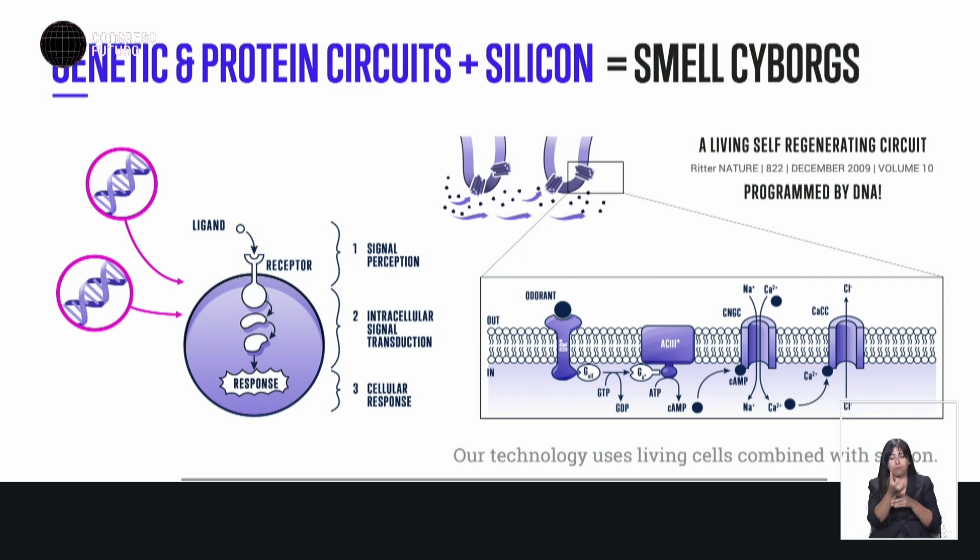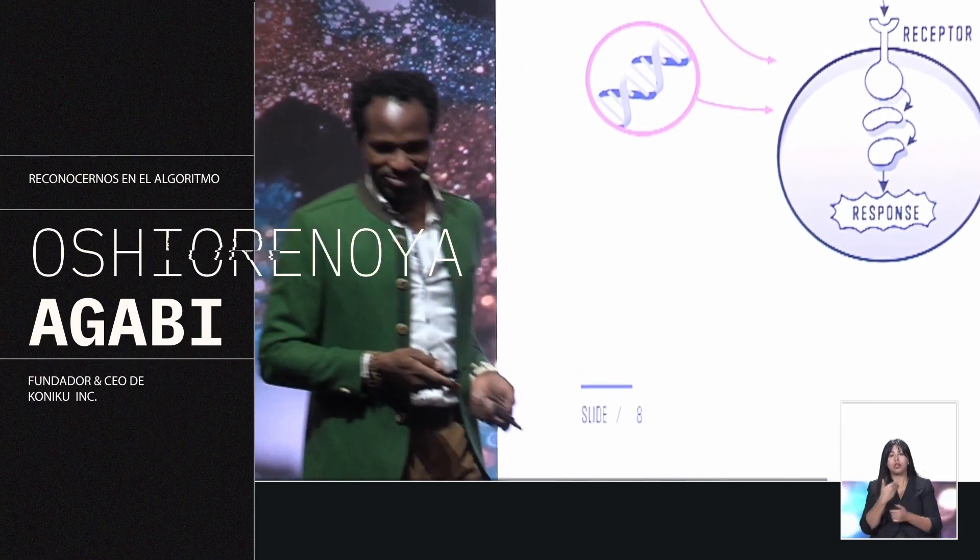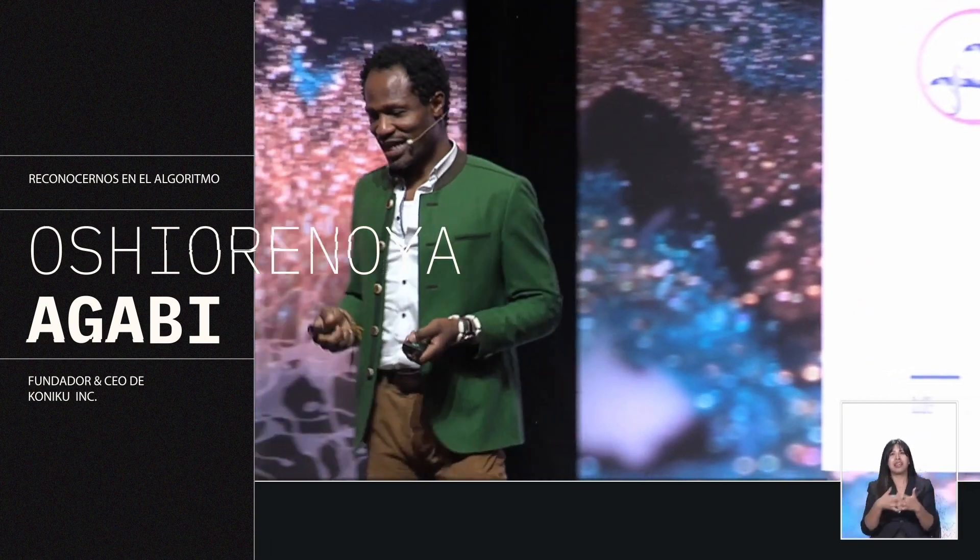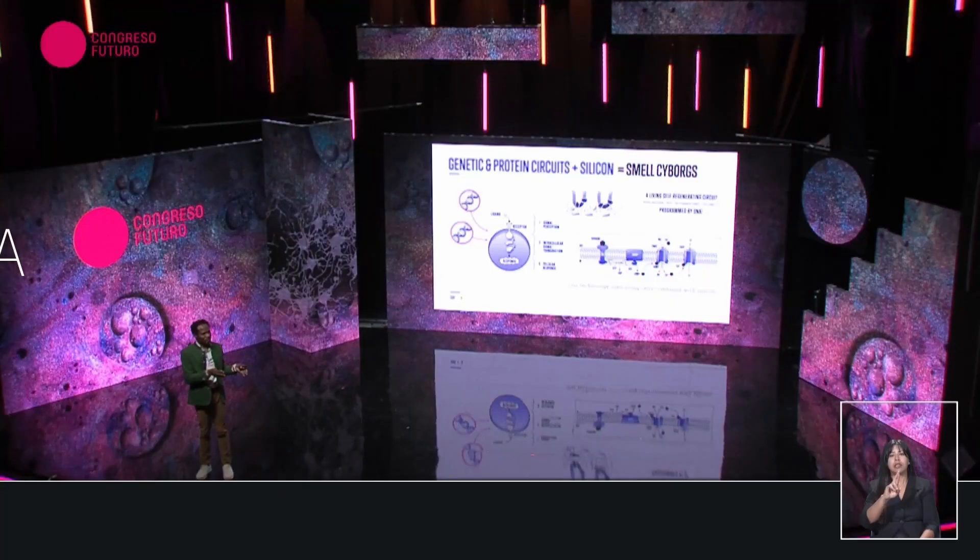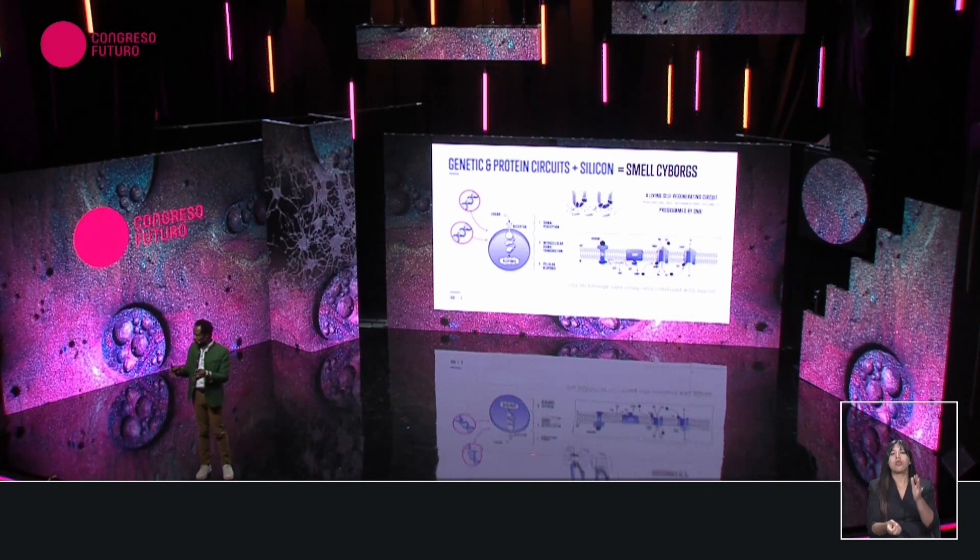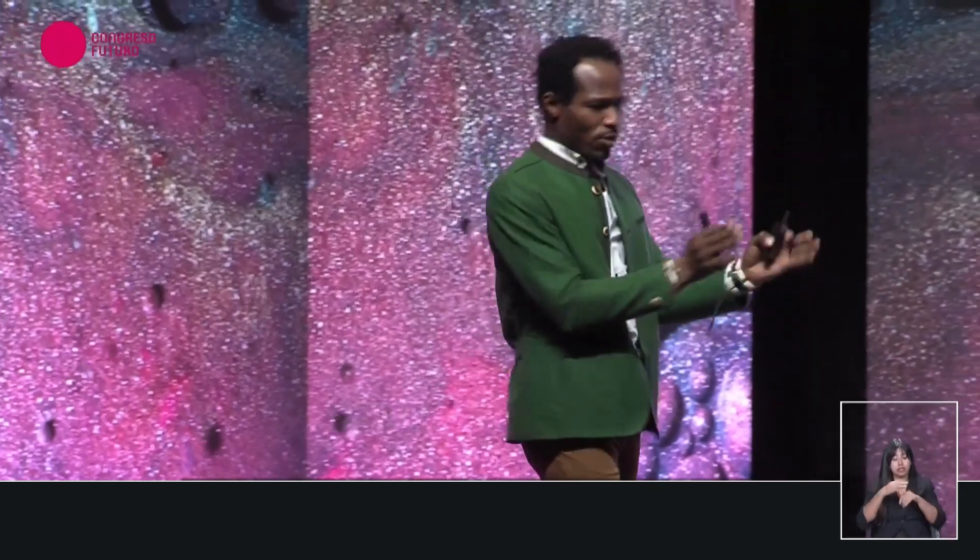So, my name is Osh Gaby, I'm the founder and CEO of Koniku. We are a company based in Silicon Valley, and we build cyborgs. What does this mean? We are building a new class of technology that takes biological tissue and merges it with silicon. So you have machines that have one part biology and the other part silicon.